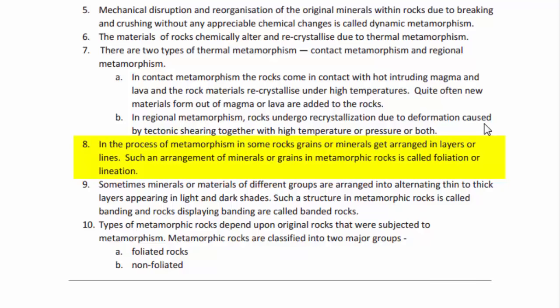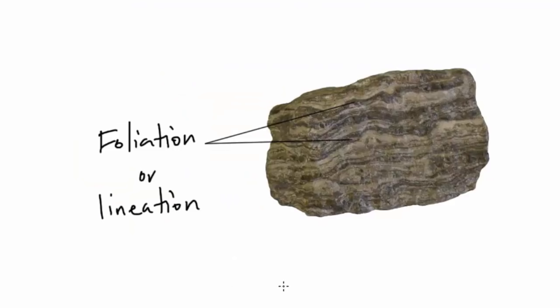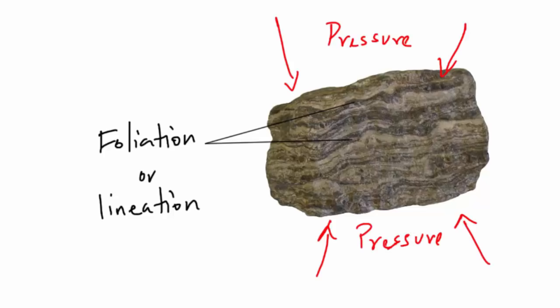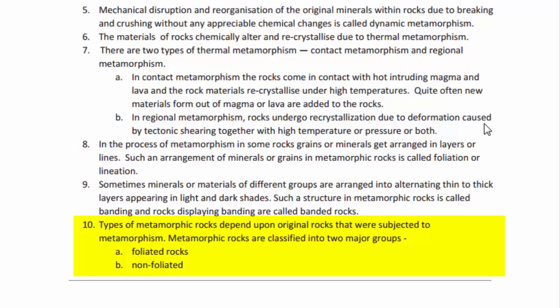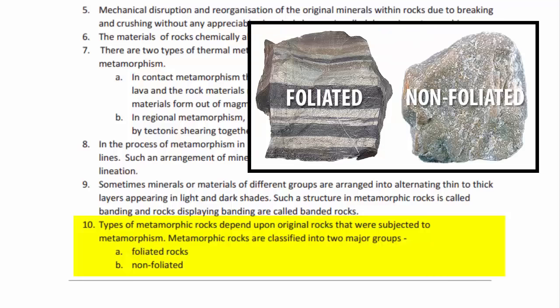In the process of metamorphism, grains or minerals in some rocks get arranged in layers or lines — this arrangement is called foliation or lineation. You can see a clear horizontal line pattern in such rocks. Similarly, banding is where layers appear in light and dark shades without a perfectly clear pattern, but it is still considered a form of foliation. Metamorphic rocks are classified into foliated rocks, which show clear layered patterns or banding, and non-foliated rocks, which show random patches of shades with no visible layers.